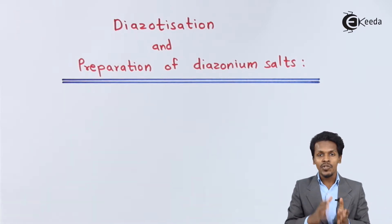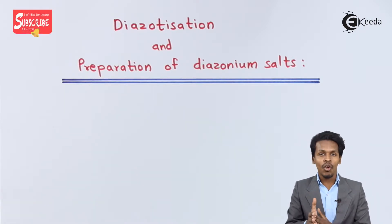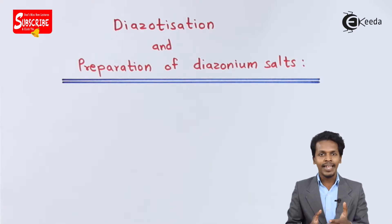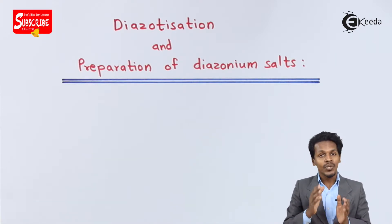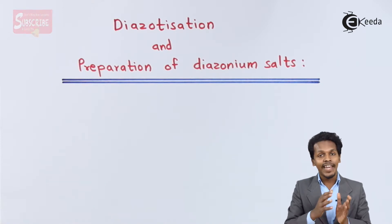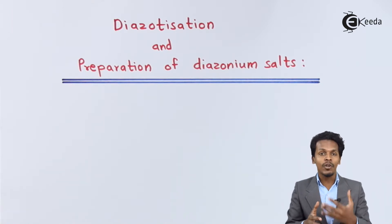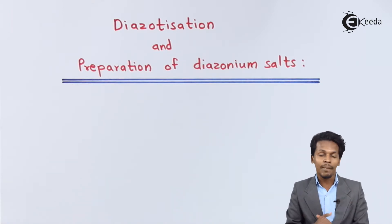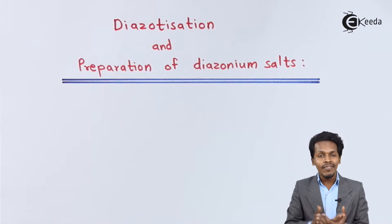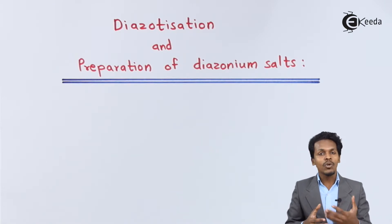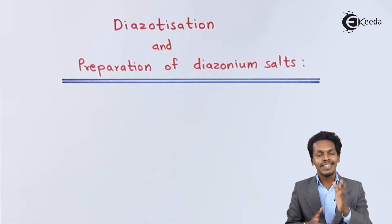Diazotization is nothing but the process of conversion of a primary amine — and this primary amine can be an aliphatic amine or it could be an aryl amine — into diazonium salts. So, this process of converting this amine group into a diazonium group is basically known as diazotization.